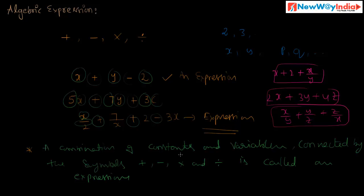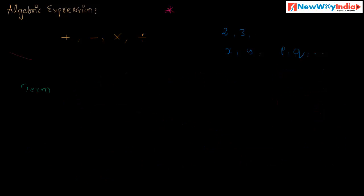Another important word is term. What is a term? The several parts of an expression separated by the sign plus and minus are called terms. In the expression 2x plus 3y plus 7z, the several parts separated by the symbols plus and minus are called the terms of the expression.